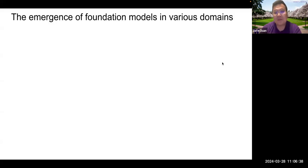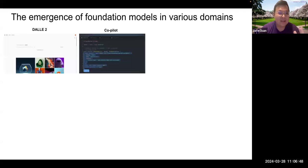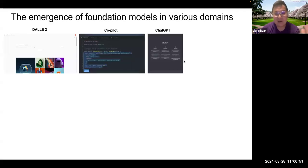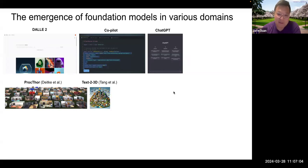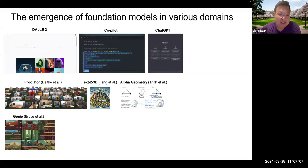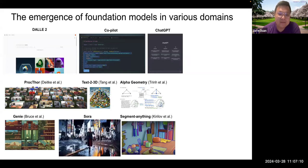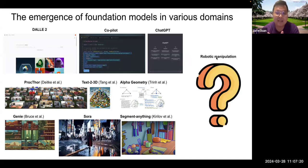To get a start on the topic, there has been a lot of emergence in foundational models over the years, especially in various domains. We have DALL-E, we have co-pilots, we have ChatGPT. For those working on embodied AI, Procton is one of the huge models able to help with object navigation. And with text to 3D, alpha geometry, and even recent video generation like Sora. So the question that still remains unclear is: what is the foundational model in robotics?